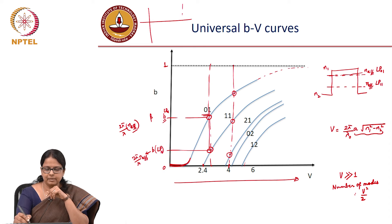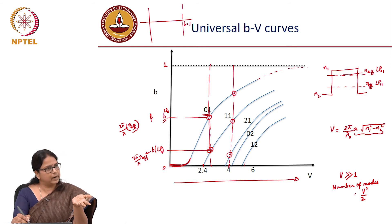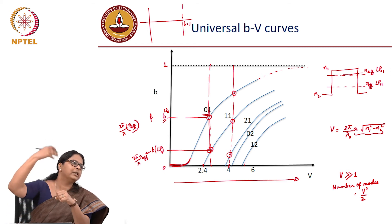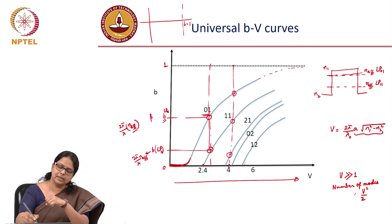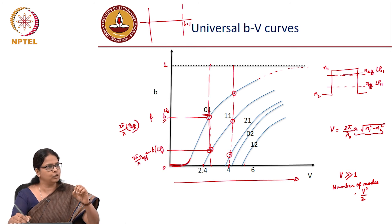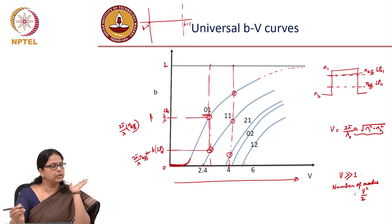B can get closer to 1 for very large values of V. But in that condition, the fundamental mode does not have an independent existence — it is always associated with many higher-order modes. B equal to 1 gives an upper bound. The solution closest to 1 tells me the feature of the fundamental mode, while B equal to 0 tells me the feature of higher-order modes. The solution closest to B equal to 1 tells me how close the n_effective of the fundamental mode is to the core index.